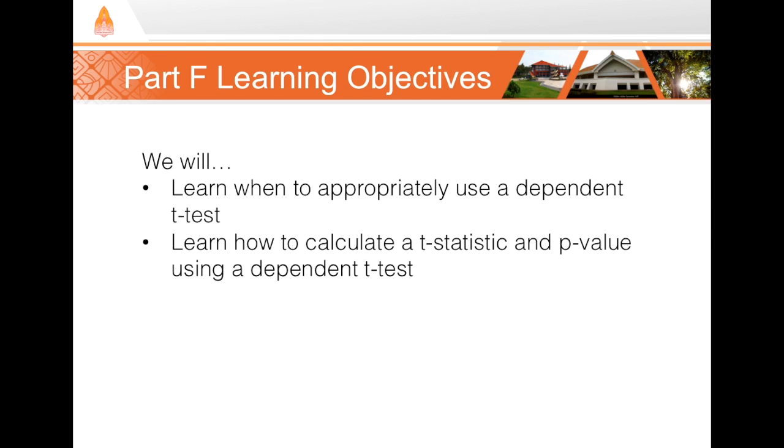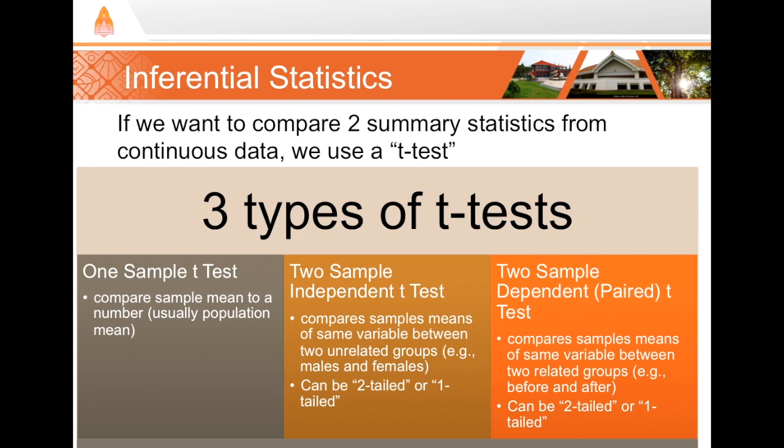As I showed you in part E, we have three different types of t-tests that we can choose from. If your two sample groups are not mutually exclusive or they're related, then we should be using the paired or dependent t-test that we're talking about here.